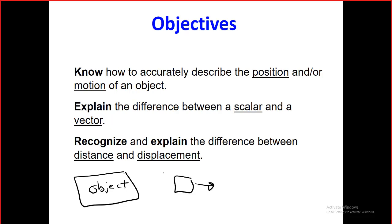If I ask you to describe the motion of an object, you can't simply say 'it's moving' — you didn't describe it. To describe it properly, you have to say it started from a certain reference point, traveled a certain distance, moved in a specific direction, and traveled at a certain speed. That is the right way to describe motion.